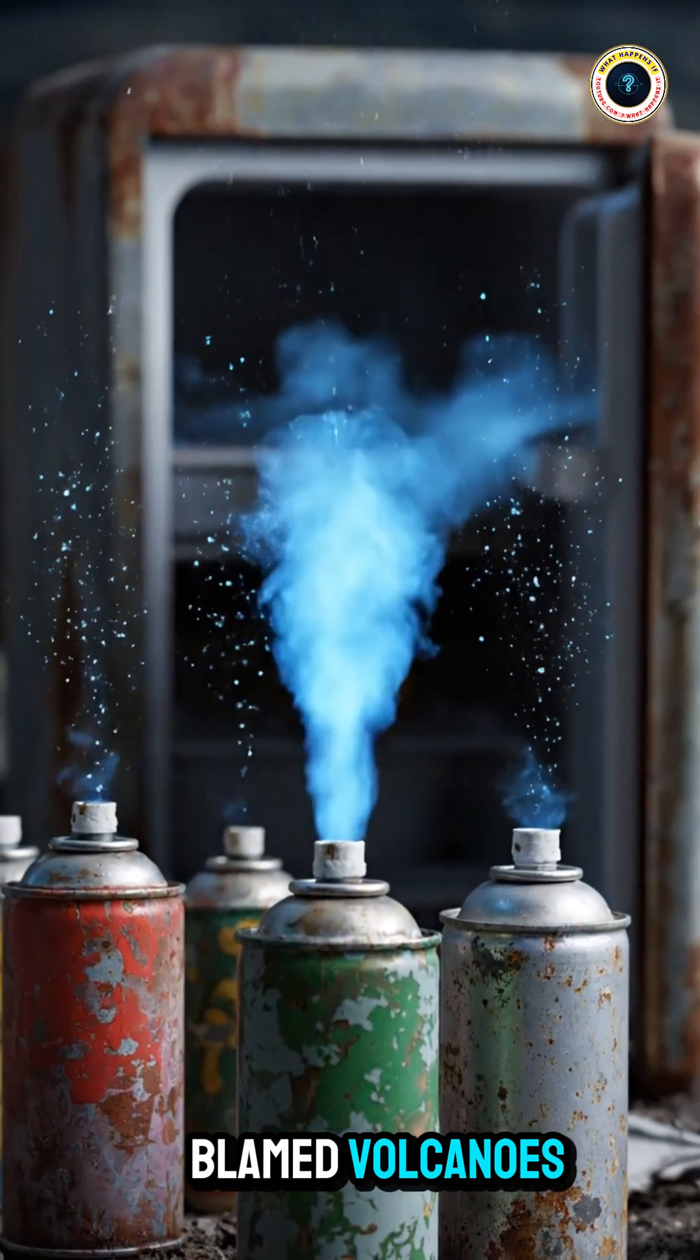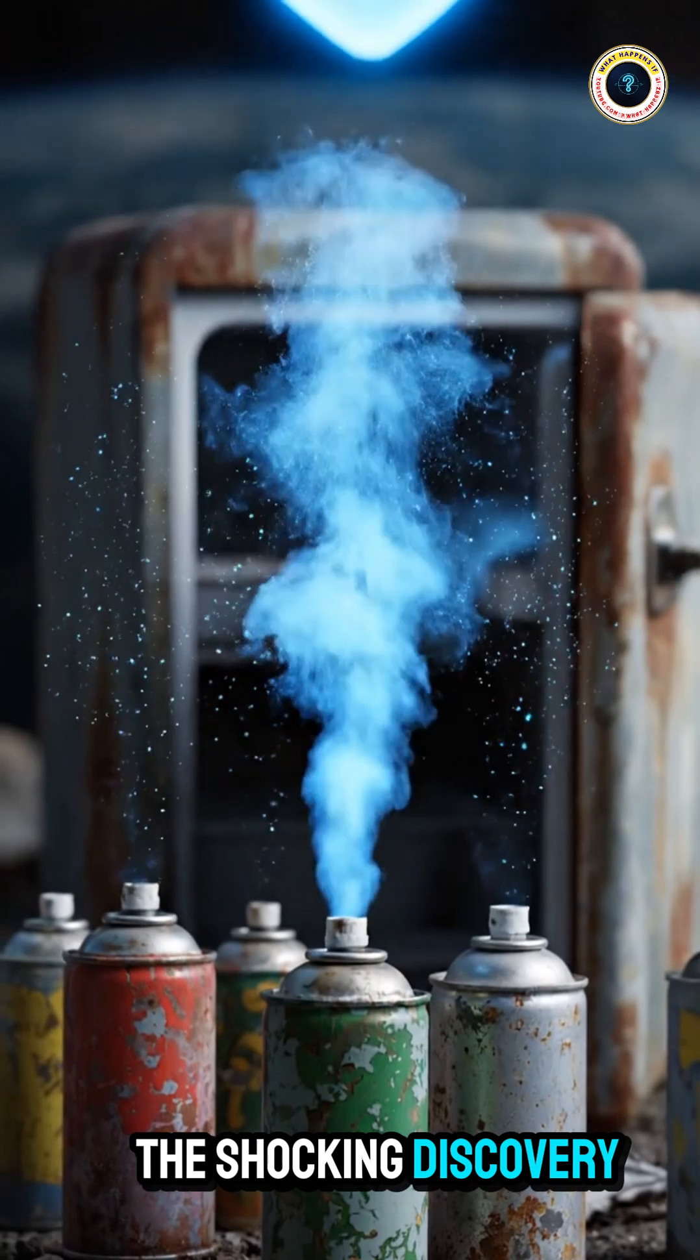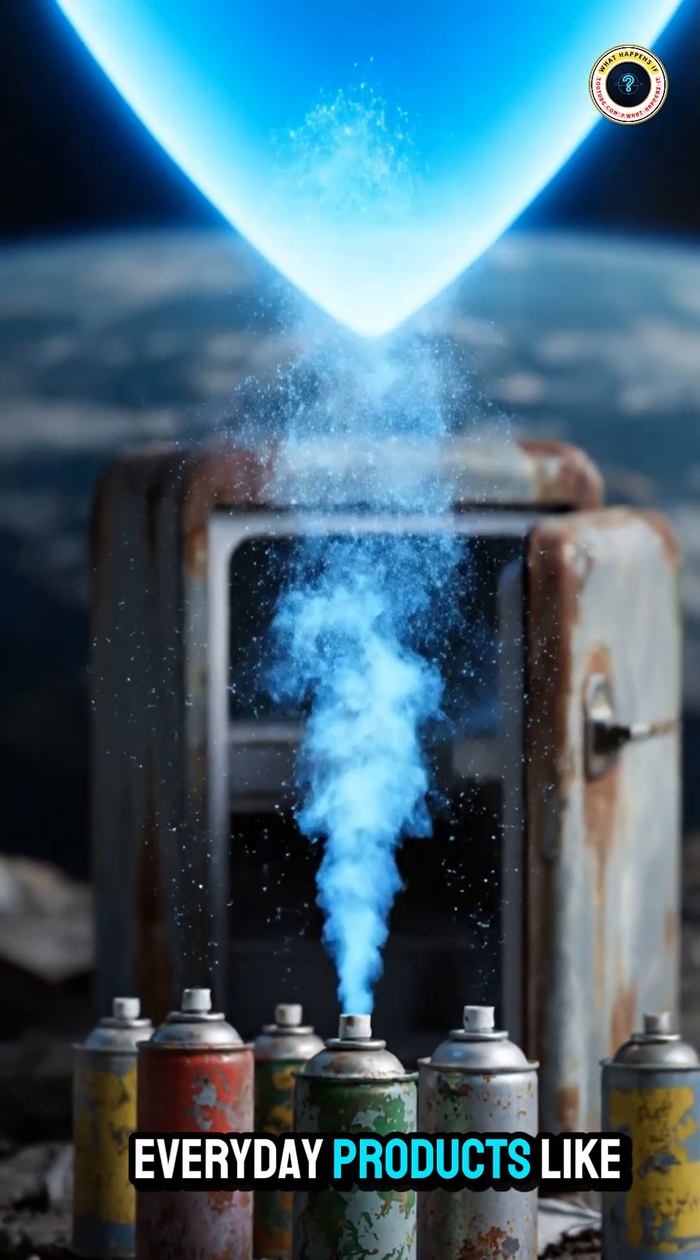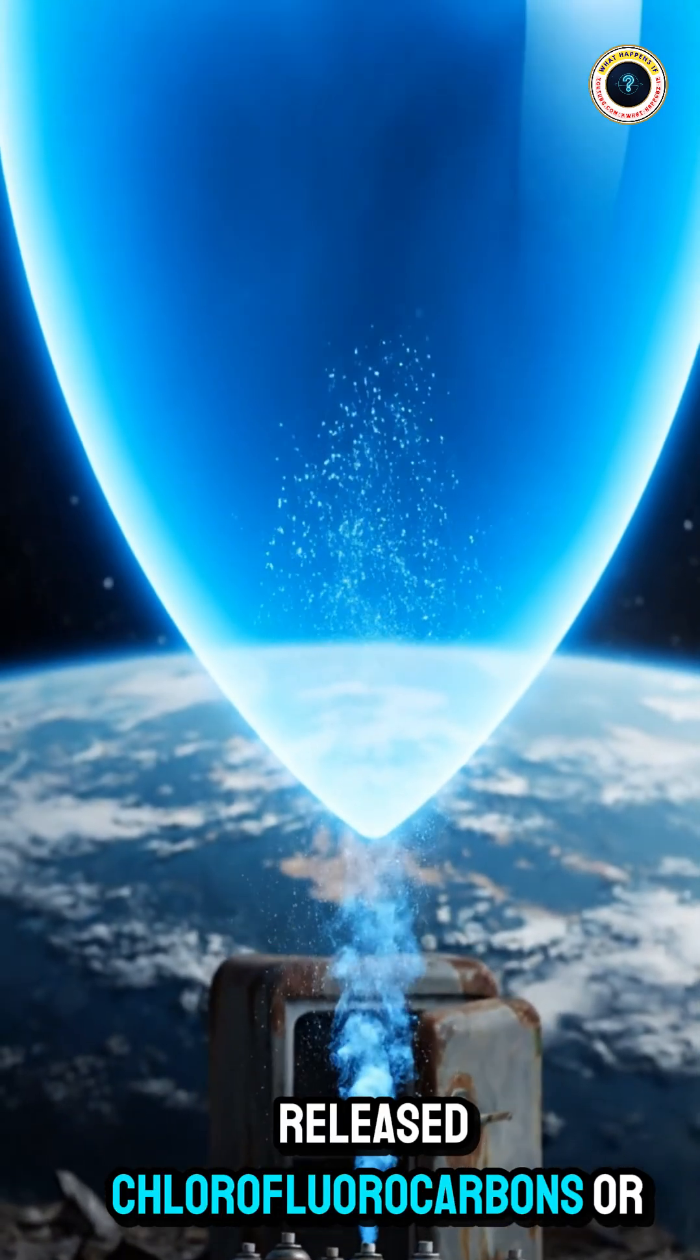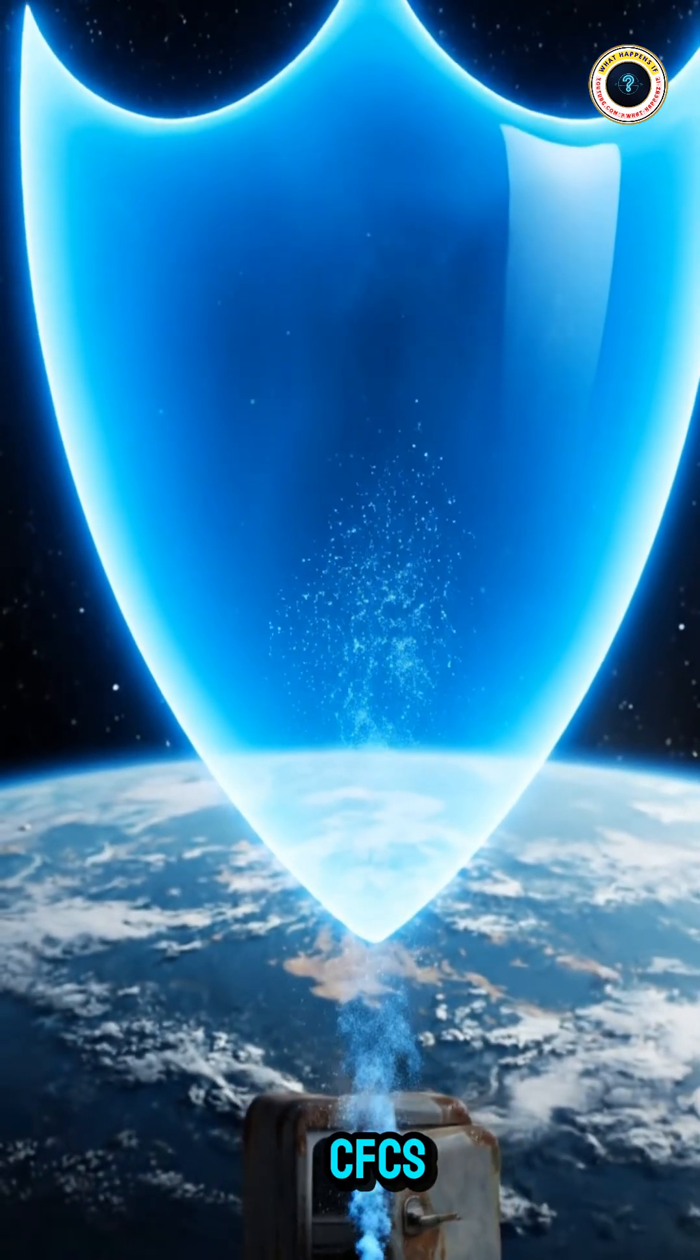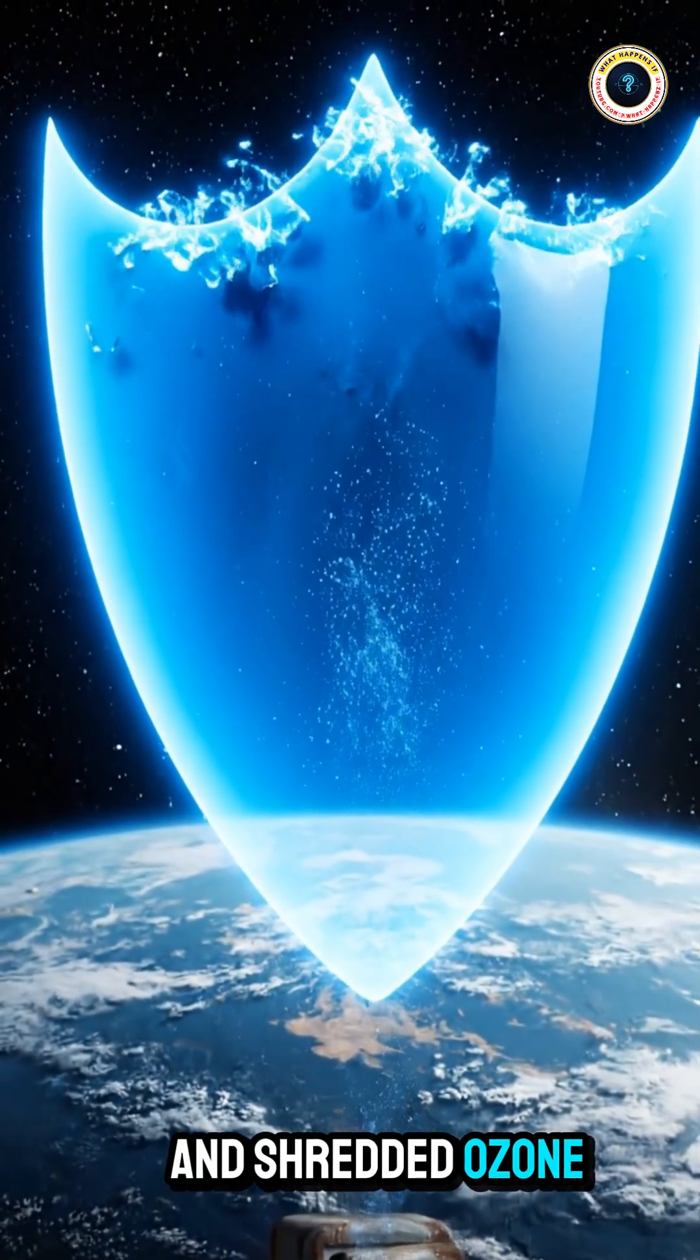At first, people blamed volcanoes, but then came the shocking discovery. Everyday products like old fridges, spray cans, and AC coolants released chlorofluorocarbons, or CFCs, which drifted up and shredded ozone molecules.